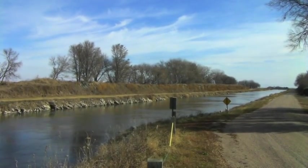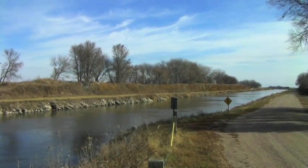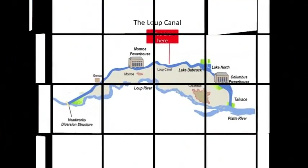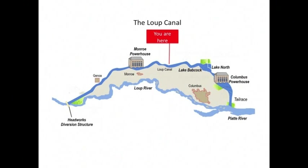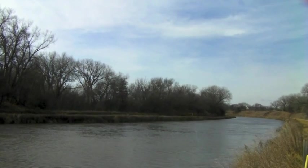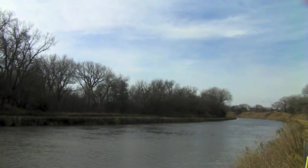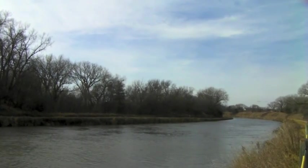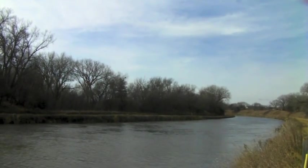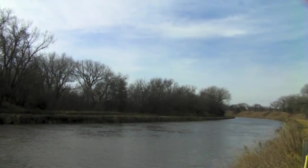From Monroe, the canal carries the water another 13 miles towards Columbus. The section between Monroe and Columbus is called the Lower Power Canal. Generally, the canal is 100 feet wide and 20 feet deep, and the water travels at a speed of 2 feet per second.